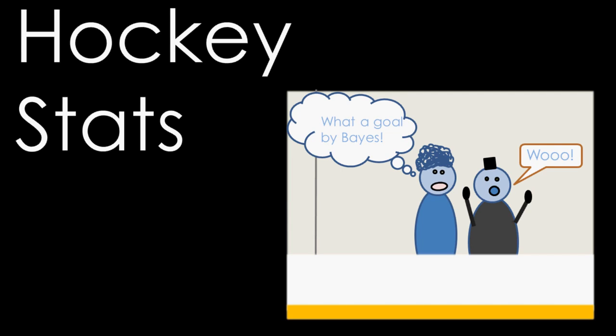Being that the way a game is won is by scoring more goals than the other team, it makes sense that one of the main ways to compare one player to the next is by the number of goals that they score. The record for the most goals scored in one NHL season, which is 82 games long, is 92 goals by Wayne Gretzky.